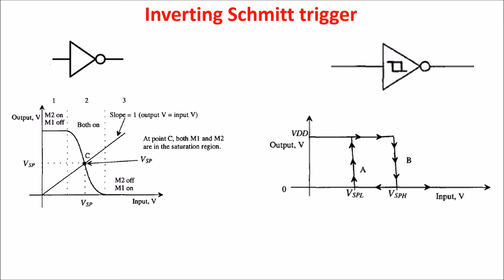On the right we have the symbol and transfer curve of the Schmitt Trigger. The symbol and transfer curve are similar to that of the inverter, but here we have two switching points VSPL and VSPH, and the curve is well defined so the slope is higher than that of the inverter. So the output transitions are faster.